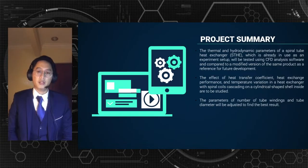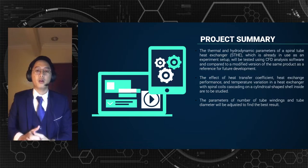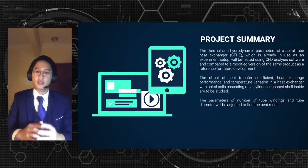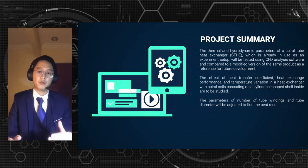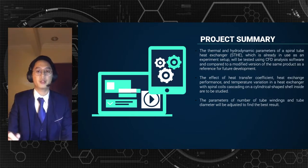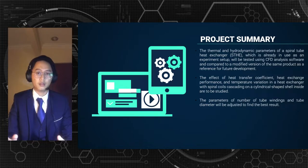For the summary, it is to study the thermal and hydrodynamic parameters of a spiral tube heat exchanger which already exists and will be tested using CFD analysis software and compared with a modified version of the same product as the reference for future improvements. The aim is to investigate the effect of the heat transfer coefficient, heat exchange performance, and temperature variation at the outlet. The parameters to be adjusted are the number of flat tube spiral windings and the tube diameter.